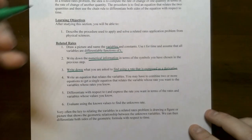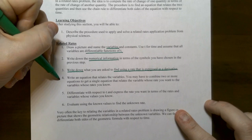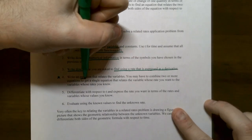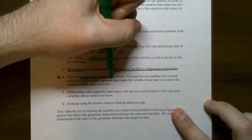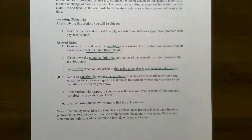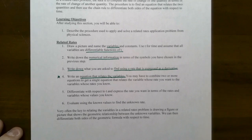You can either use Leibniz notation, which I will use, or you can use prime notation for your derivatives. Once you have the first three steps, the fourth step is the most important step: it is writing an equation that relates all the variables in the problem. This could be a geometric formula for area, volume, surface area, or the Pythagorean theorem — those are just some of the ones that come up in this section.